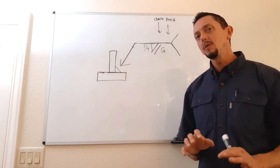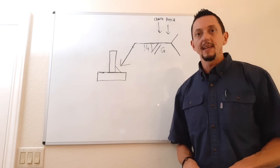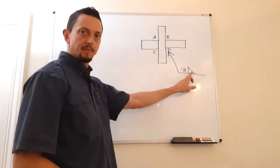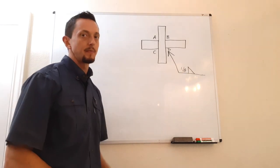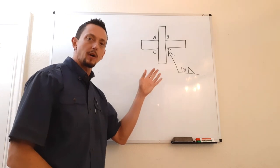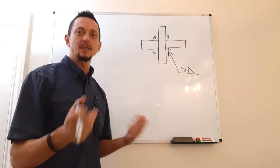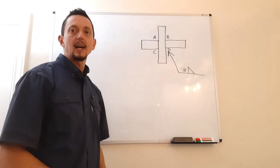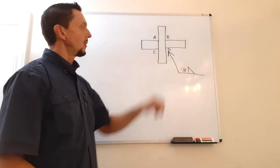Now let's look at a few examples to test your knowledge on weld placement. We have a weld call out on the top of the reference line for a fillet weld — an eighth-inch weld, which refers to the size of the fillet weld because it's to the left of the weld symbol. The key thing is side significance. Given four possible locations A, B, C, and D, where would the weld placement be?